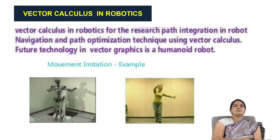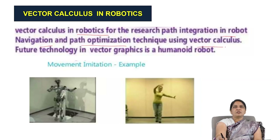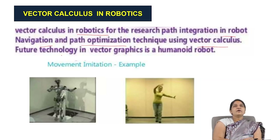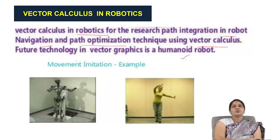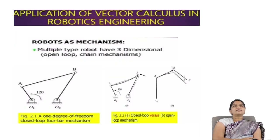Coming to vector calculus in robotics: it is used for robot navigation and path optimization techniques. In future technology, vector graphics are also applied to human robot movement imitation — where a robot mimics the movements of a person in the same way they are performed.